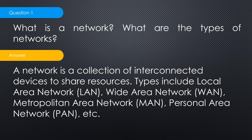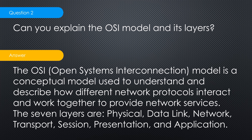First question: what is a network and what are the types of networks? This is basically just an icebreaker — they want to know if you are aware of different network types. You can say a network is a collection of interconnected devices to share resources. Types include LAN (local area network), WAN (wide area network), MAN (metropolitan area network), and CAN (campus area network).